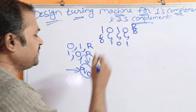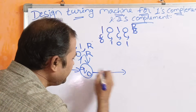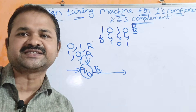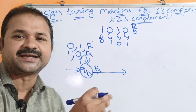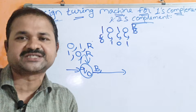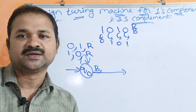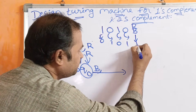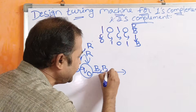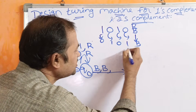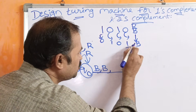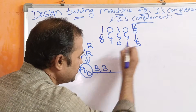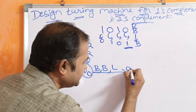Now assume that at this position we have a blank symbol. If we reach the blank symbol on q0, it specifies that the complete input string has been processed. So replace blank by blank — no need to change the content — and move the head towards the left.